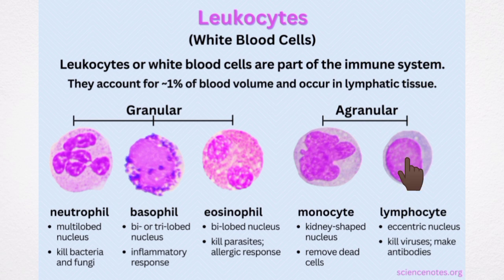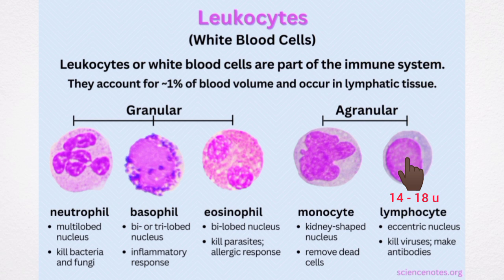Like monocytes, lymphocytes also do not have granules in their cytoplasm. The nucleus is oval, bean-shaped, or kidney-shaped. The nucleus occupies most of the cytoplasm, and a rim of cytoplasm may or may not be seen. Depending upon the size, lymphocytes are divided into two groups: large lymphocytes, which are younger cells with a diameter of 10 to 12 microns, and small lymphocytes, which are older cells with a diameter of 7 to 10 microns.